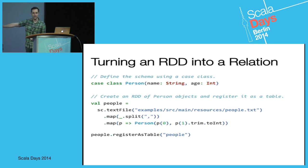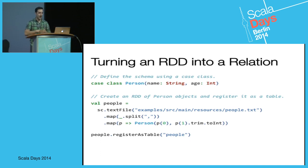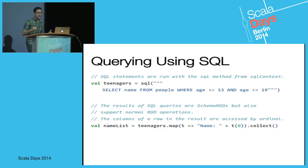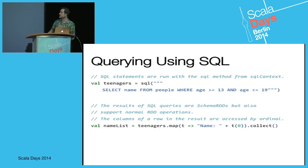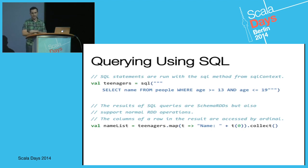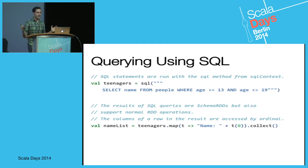As soon as you call registerAsTable, the Scala compiler gives us a type tag, and from that type tag we infer the schema of your table. We convert this collection of objects into a columnar representation — much closer to a relation — and now you can reference it as 'people' in SQL queries. Once registered, you can run standard SQL queries using the SQL command from the SQL context. For example, we can pull out the name of all people aged between 13 and 19. Just like all Spark operations, this SQL command returns an RDD, and this is a lazy transformation — no work has actually been done at this point.